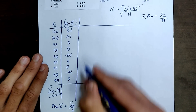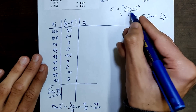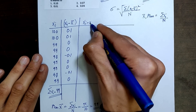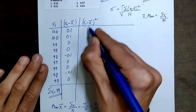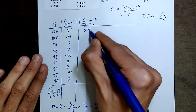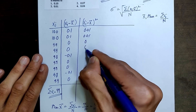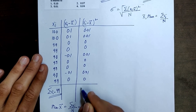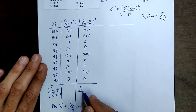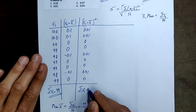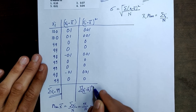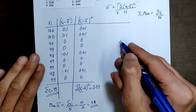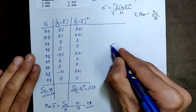Now we calculate the square of each deviation, (XI minus X-bar) squared. The squared values are: 0.01, 0.01, 0, 0, 0.01, 0, 0, 0, 0.01, 0. Adding all these terms, Sigma (XI minus X-bar) squared comes out to be 0.04. So the standard deviation can now be calculated.